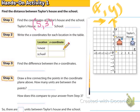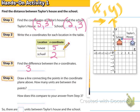Then we do the same thing for the school: we go over to two and up to three, so we write two comma three. The x-coordinates are five and two, and we find the difference — that's just subtraction — we get three. Now we draw a line connecting the points, and counting the units, it's one, two, three away. Each box counts as one, so it's three units away, and our answer is that there are three units between Taylor's house and the school.